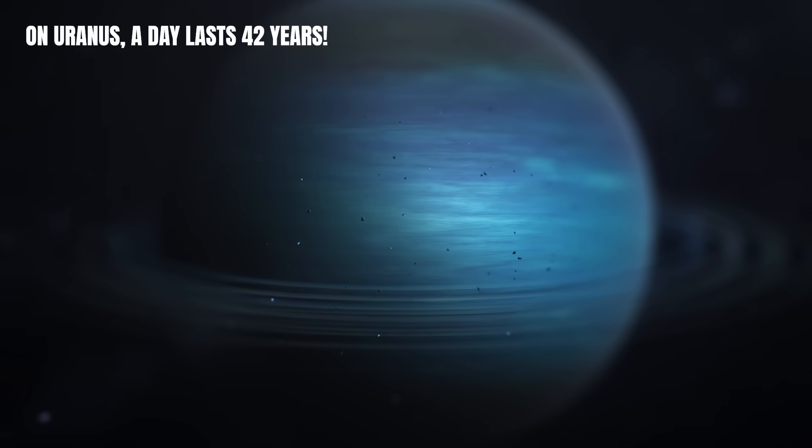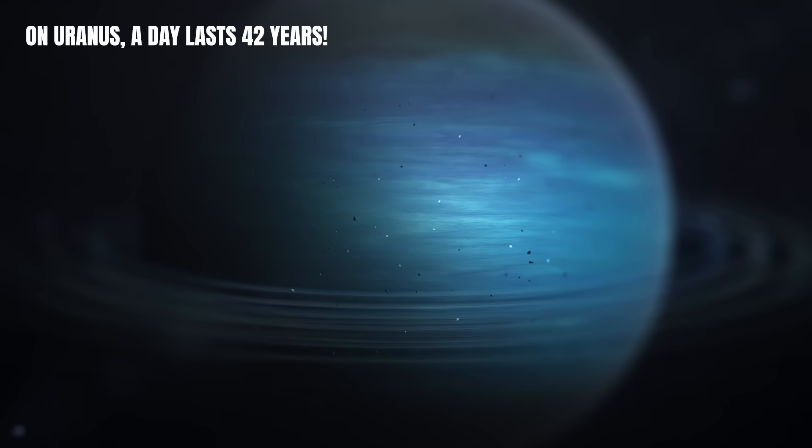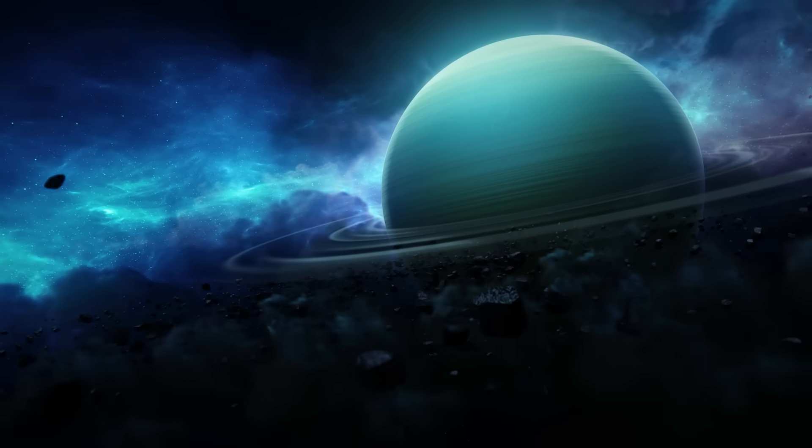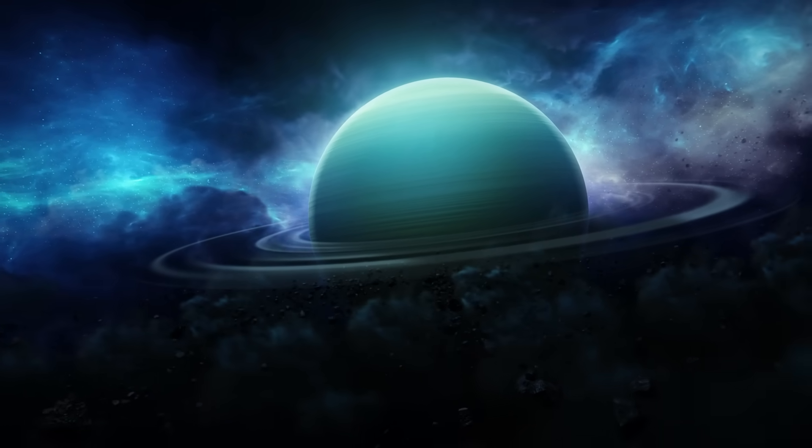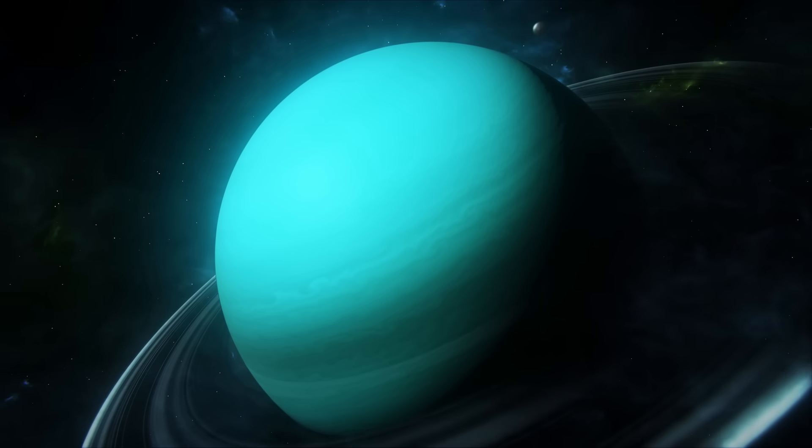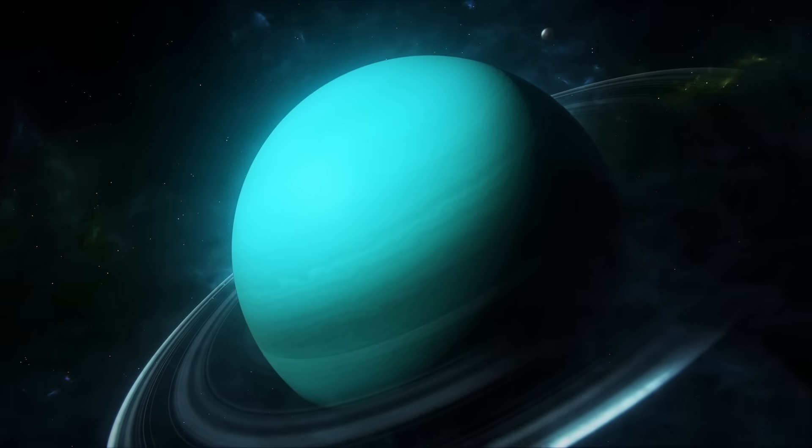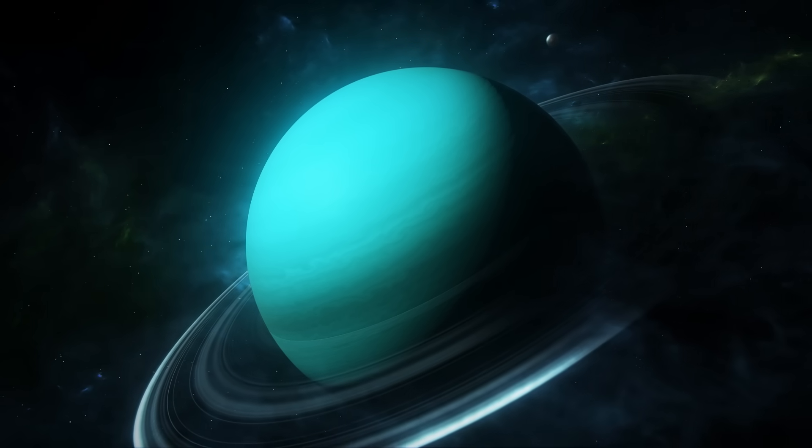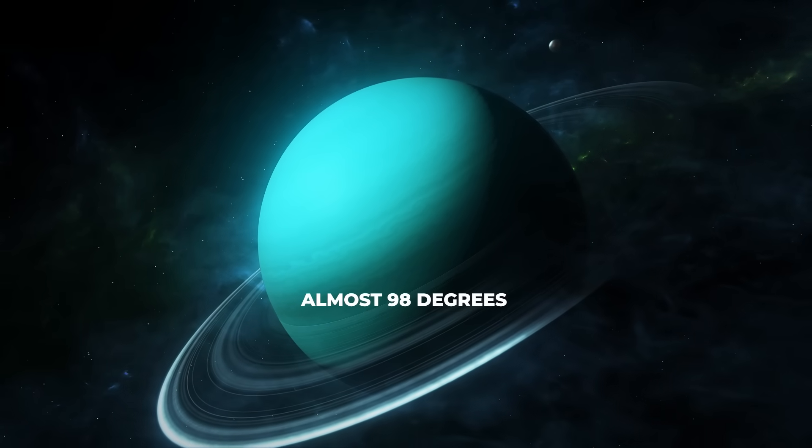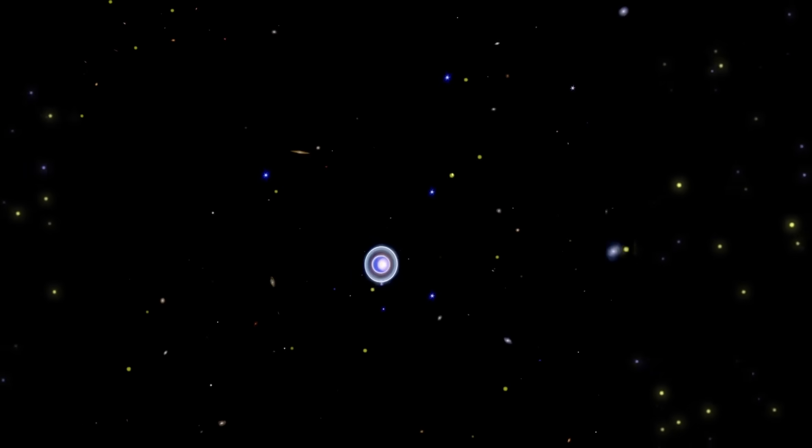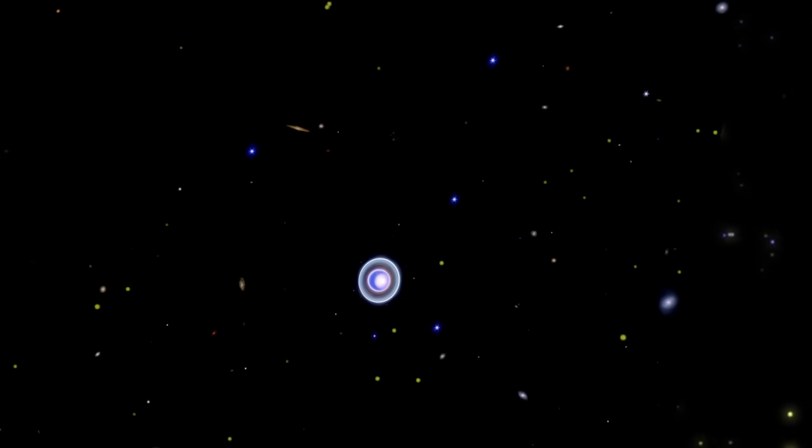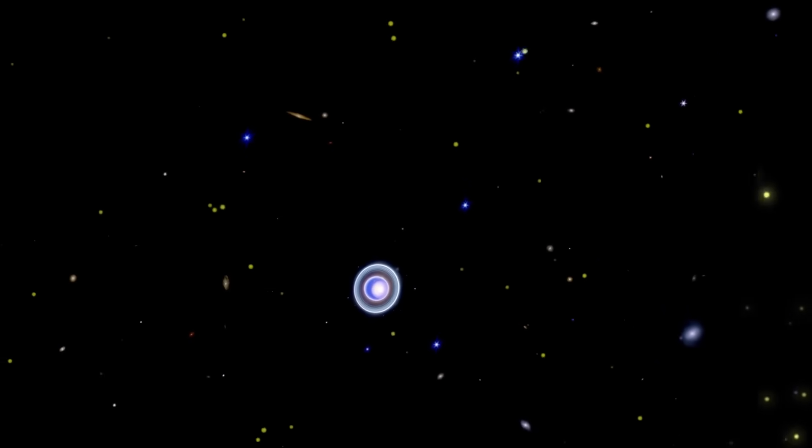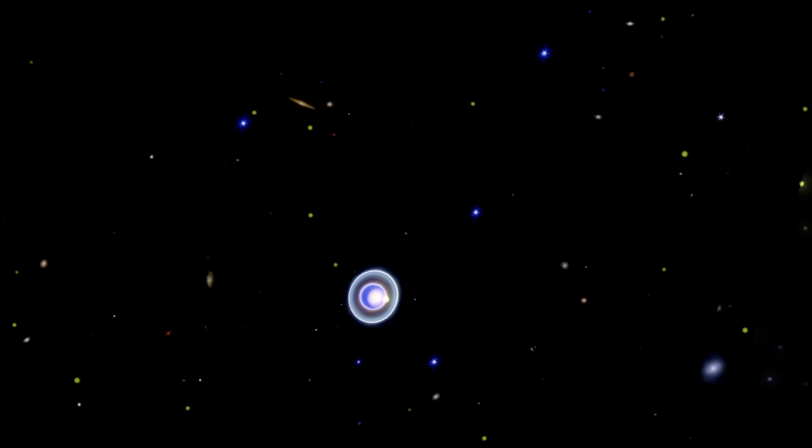On Uranus, a day lasts 42 years. Can you imagine a day lasting 42 years? On Uranus, this is a reality. This icy giant planet has a unique phenomenon in the solar system due to its extreme inclination of almost 98 degrees regarding its orbit. This means that Uranus practically rolls around the Sun, with its poles alternating between receiving continuous sunlight and being plunged into an endless night.